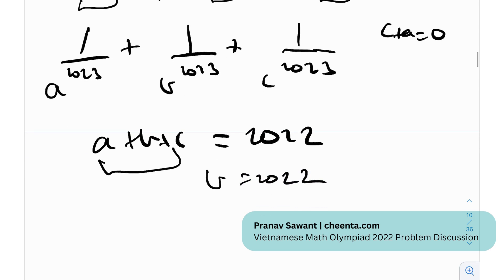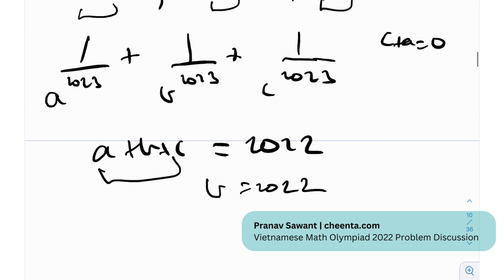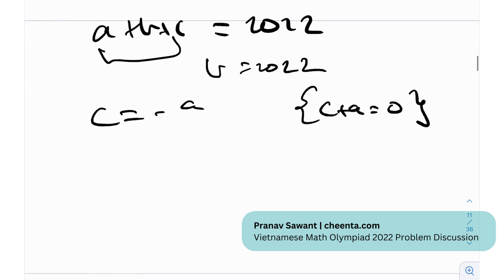So b becomes 2022, right? If a+b was 0, then c would become 2022. If b+c was 0, then a would become 2022. But it really does not matter. It really does not matter, okay? Let's just consider one of the cases where c+a is 0, right? So essentially c equals negative a, right? c+a is 0. We are considering this possibility. Without loss of generality, it's symmetric, so it does not matter what you take.